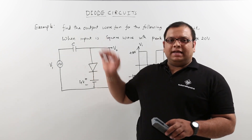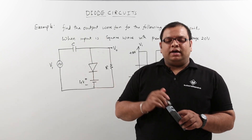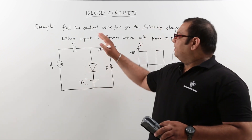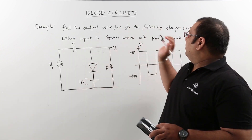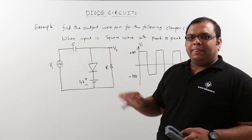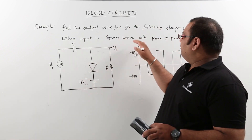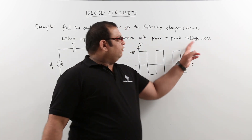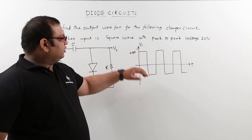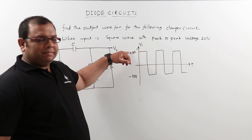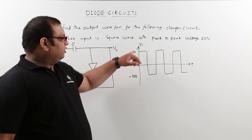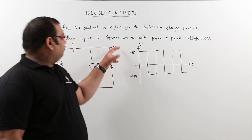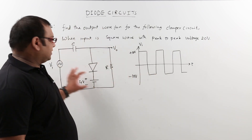Let us discuss a problem on clamper circuits. The problem statement is: find the output waveform for the following clamper circuit when the input is a square waveform with peak-to-peak value of 20 volts. So the positive peak is +10V and the negative peak is -10V. This is the square waveform given, and we need to find the output for this clamper circuit.